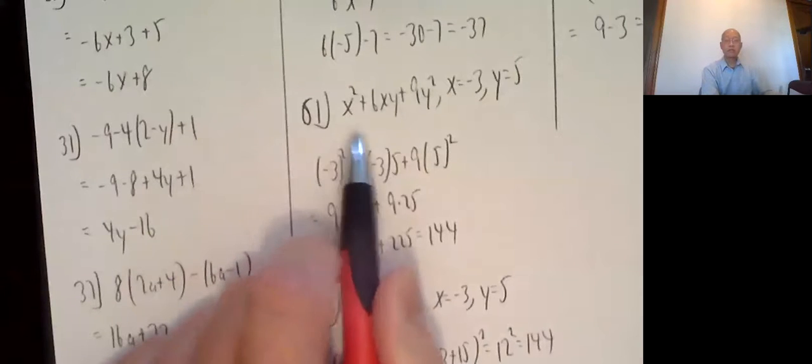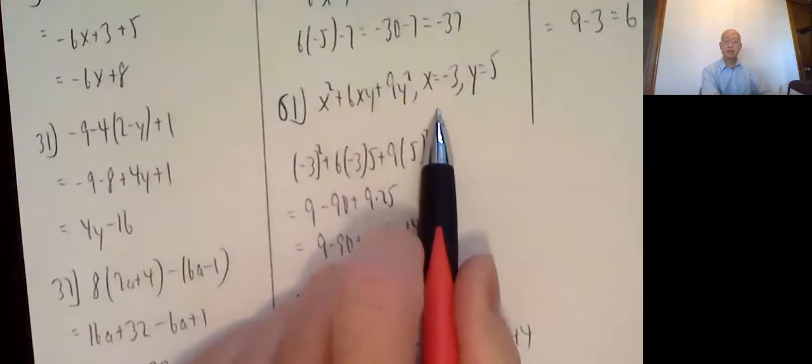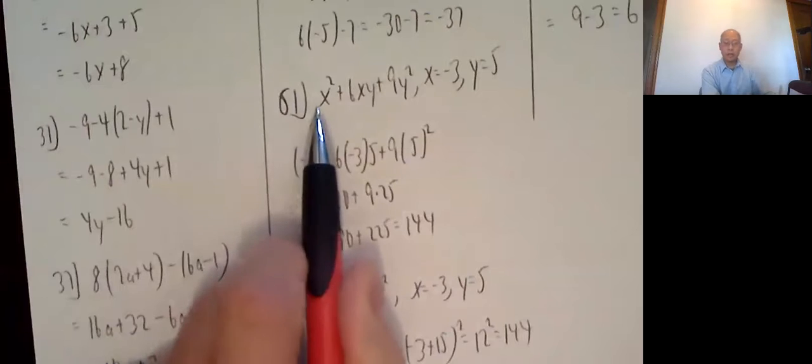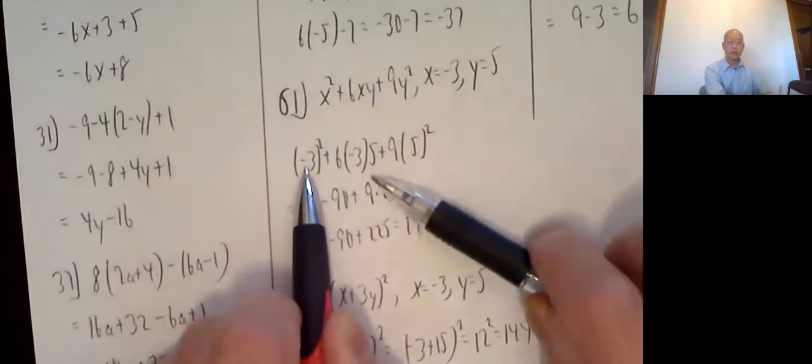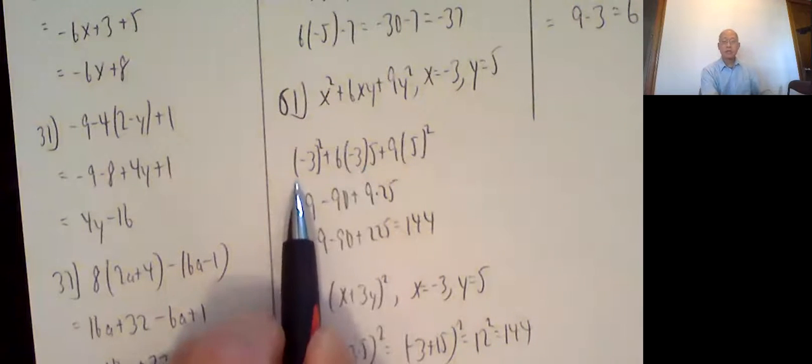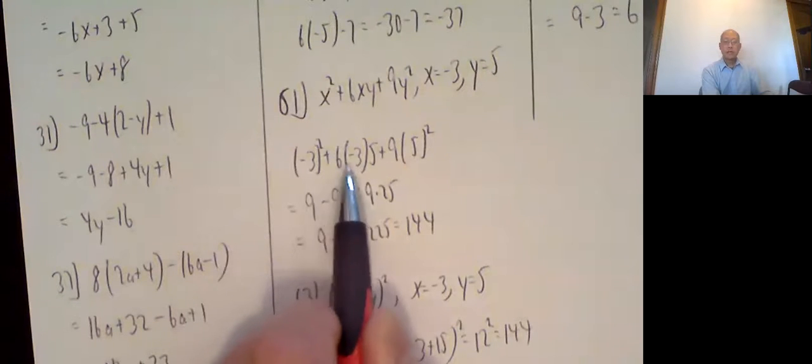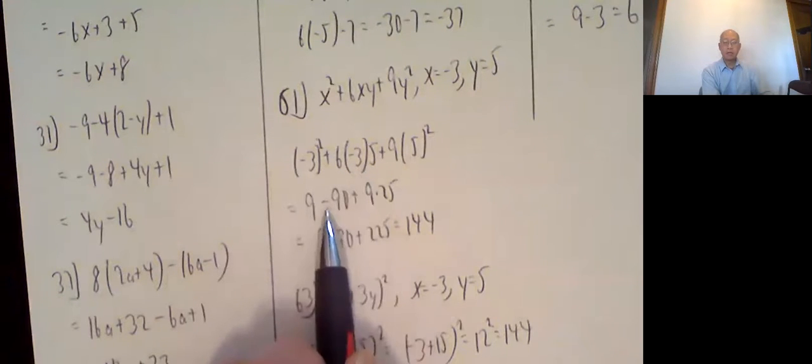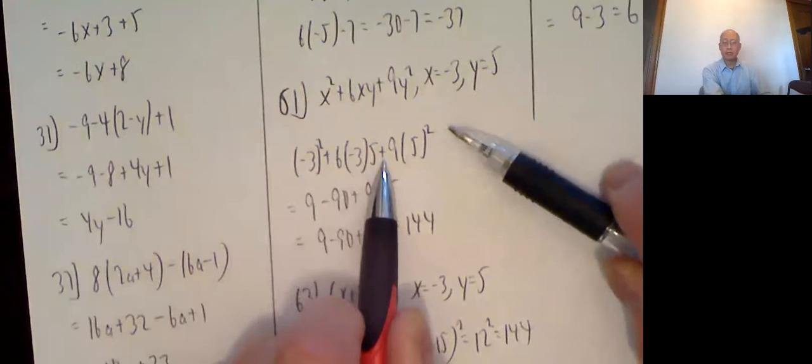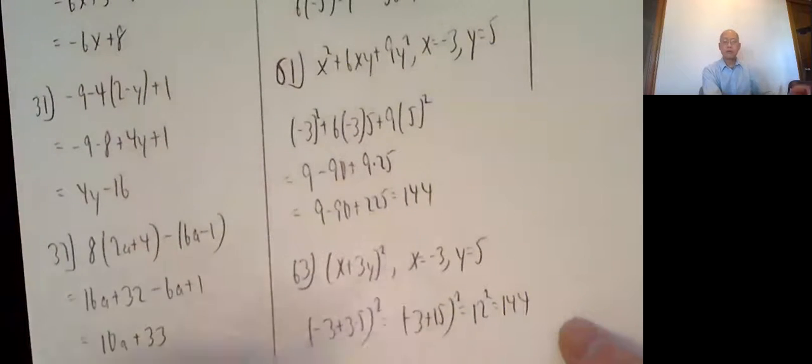61, this complicated expression x squared plus 6x plus 9y plus 6xy plus 9y squared. Plug in x equals negative 3, y equals 5. So everywhere I see x, I put negative 3. There and there, there and there. Everywhere I see y, I put in 5. There and there. So negative 3 squared, negative 3 times negative 3 is 9. 6 times a negative 3 times a 5 comes out to be a minus 90. 9 times 25. Order of operations, I square first. So 9 times 25, 10 comes up to 225. Put these all together, 144.